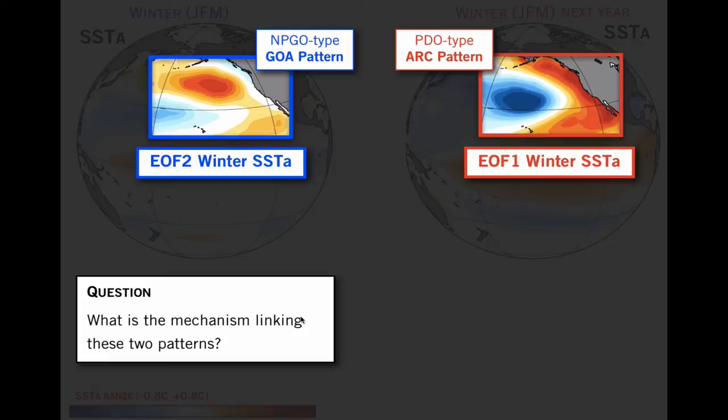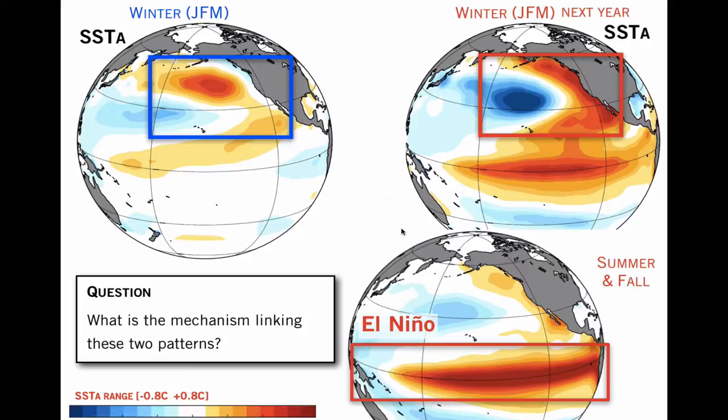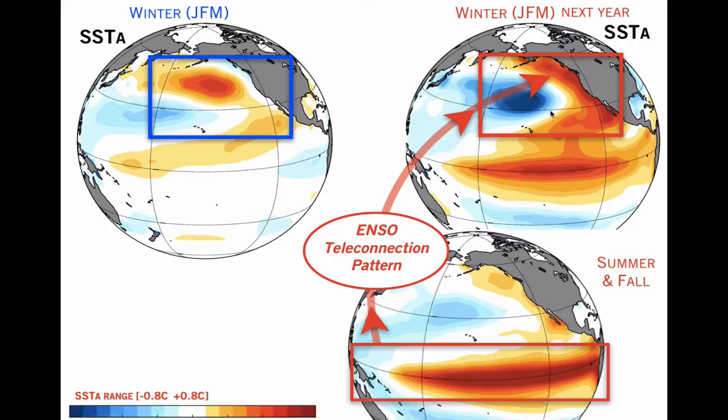This poses the question: what is the mechanism linking these two patterns, and why is there a trend in this coupling? To do that, we have to think about tropical variability, and in particular El Niño. We know that when we have El Niño in the summer and fall, there are teleconnections to the extratropics which essentially imprint part of the El Niño variability into the Pacific Decadal Oscillation pattern.